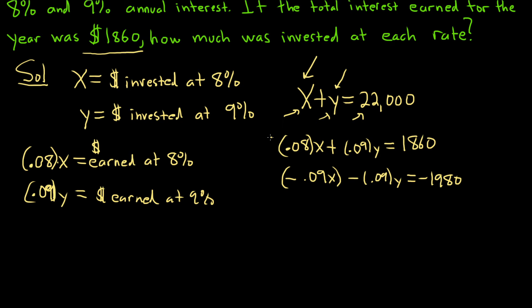We took this first equation and multiplied it by negative 0.09. Why? Because now when we add these, stuff is going to go away.